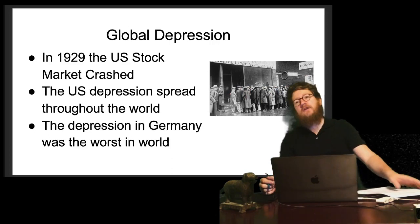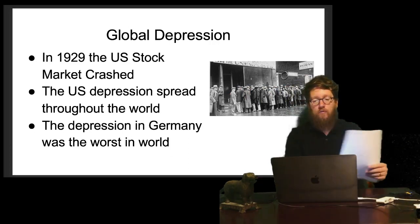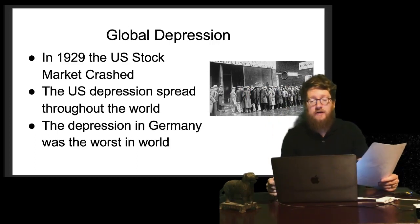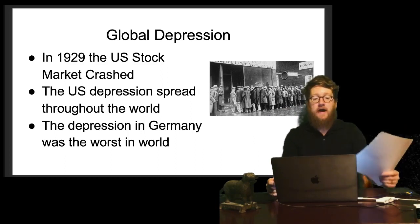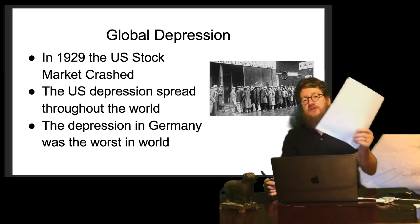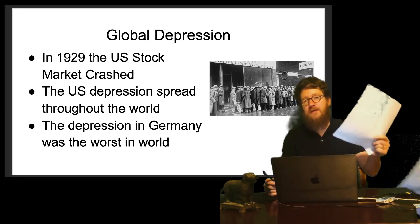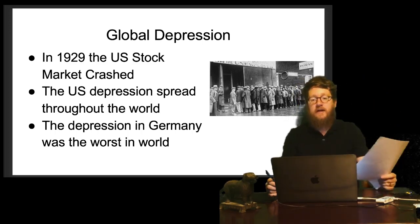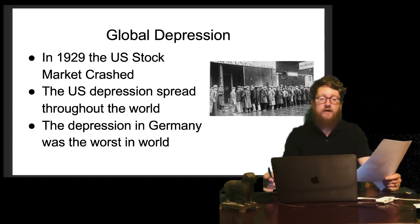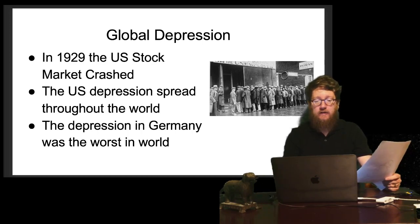The second cause of World War II was the Global Depression. It particularly hit Germany hard. It started in 1929 when the U.S. stock market crashed, and the depression spread throughout the world. Germany was hit the worst. People there were looking for a way out of this economic situation, and we're going to see that Hitler was one of those who led that way out.